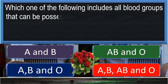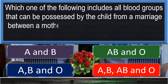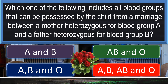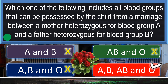Which one of the following includes all blood groups that can be possessed by a child from a marriage between a mother heterozygous for blood group A and a father heterozygous for blood group B? A, B, AB, and O.